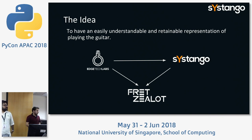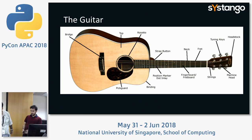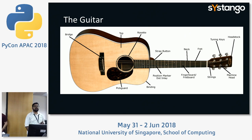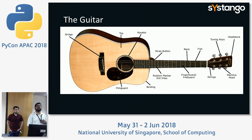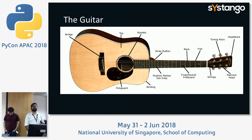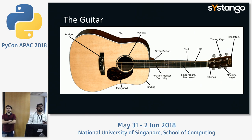Before we proceed further, Srinivas will explain some guitar terminologies. So this is a guitar. The most important parts we are concerned about are strings — these thin wire-like things you see — and these bars called frets. This space between bars is called a fret. What happens is that on a string, if you press a fret, you hear a sound and intonation. If you press a different fret, you hear a different intonation. That's how guitar is played. If you do not press any fret at all, that state of guitar is called open string.